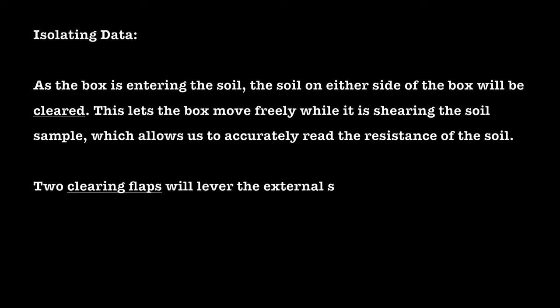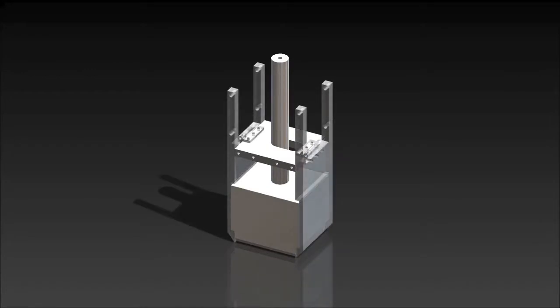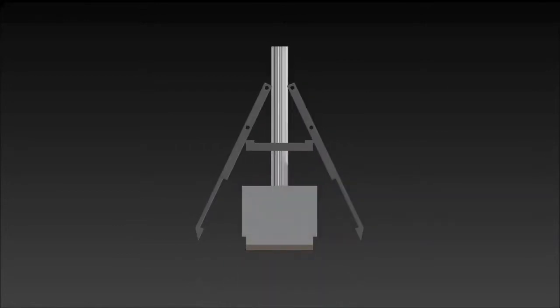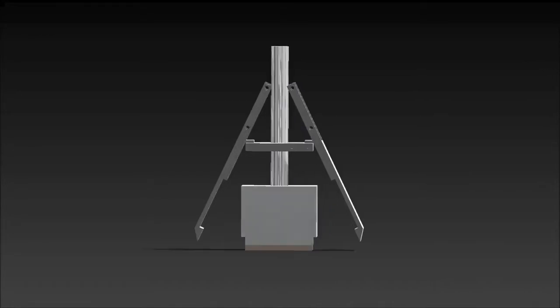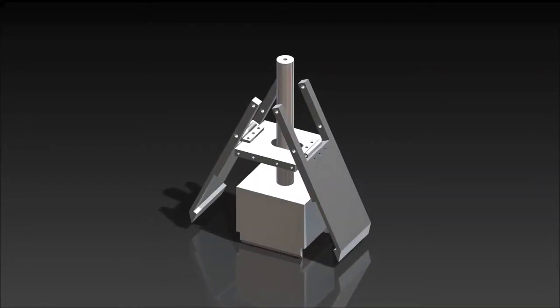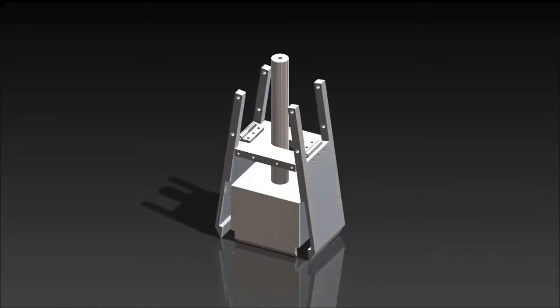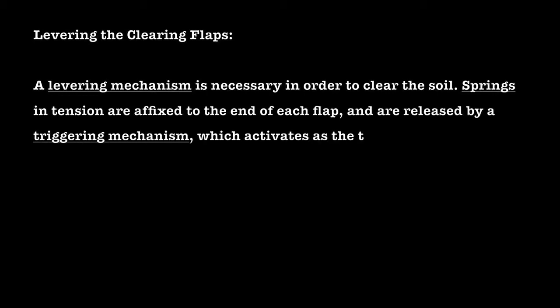Two clearing flaps will lever the external soil out of the way, and the box will be free to move in the direction of the shear force. A levering mechanism is necessary in order to clear the soil. Springs and tension are affixed to the end of each flap and are released by a triggering mechanism, which activates as the tool is lowered into the soil.